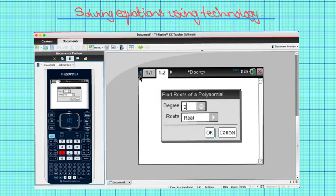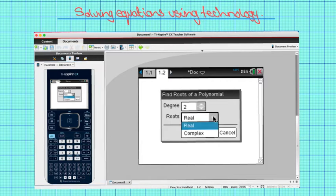We're dealing with a quadratic, so it is a degree 2. Just in case we have any complex roots, click on complex, enter.